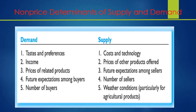Non-price determinants of supply and demand. Both supply and demand contain non-price determinants — for example, taste and preferences. We have seen how the taste and preferences for soft drinks, for example, has changed and is constantly changing.